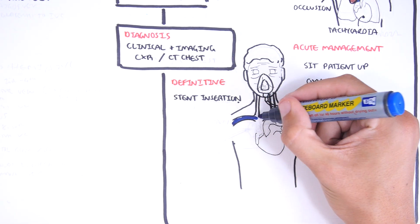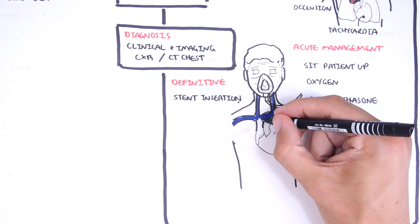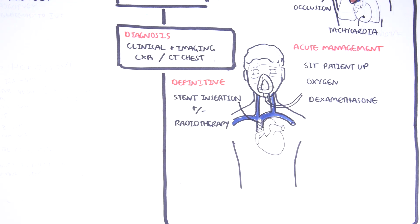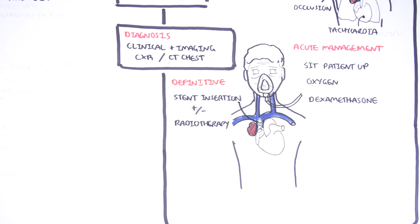The definitive management is a stent inserted to open up the superior vena cava vessel, allowing better return to the right atrium. Radiotherapy is used to reduce the size of a tumor or mass for symptomatic relief.